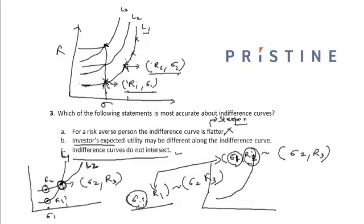For the same standard deviation, he is getting a higher return in one case and a lower return in the other. This runs against the assumption of the indifference curve, and hence we say that l1 and l2 can never intersect with each other. Therefore, the indifference curves do not intersect, and the correct option is option C.